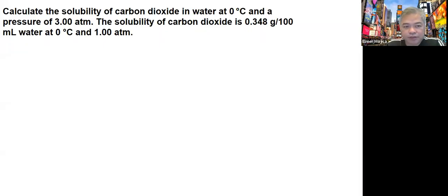In this problem we're asked to calculate the solubility of carbon dioxide in water at zero degrees Celsius and a pressure of 3 atmospheres. The solubility of carbon dioxide is 0.348 grams per 100 mL water at zero degrees Celsius and 1.0 atmosphere.